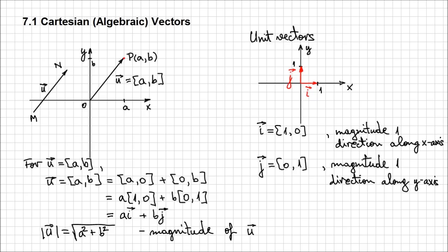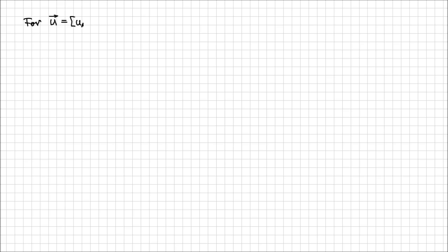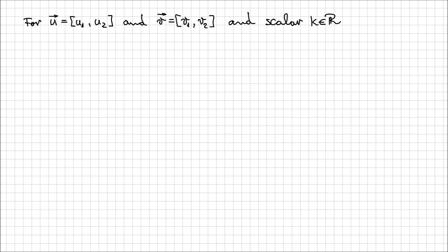Now let's go further. In the previous chapter, we dedicated an entire section to the addition and subtraction of vectors. Let's see if we can do the same thing now a little faster. So, if we have two vectors — u described by [u1, u2], its x and y coordinates of the endpoint, and v is [v1, v2] — and we have a scalar k, which is a real number, then u plus v is going to be equal to [u1 + v1, u2 + v2].